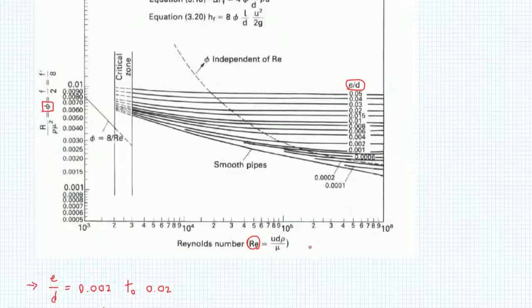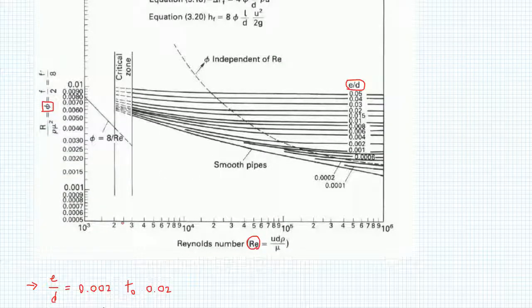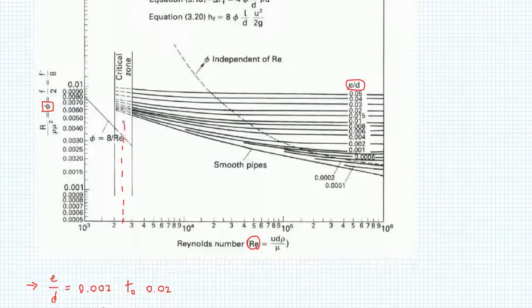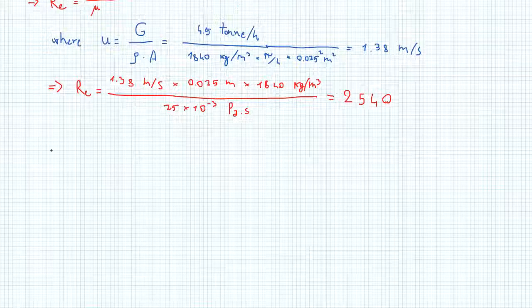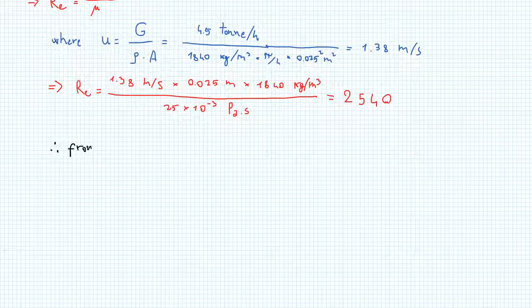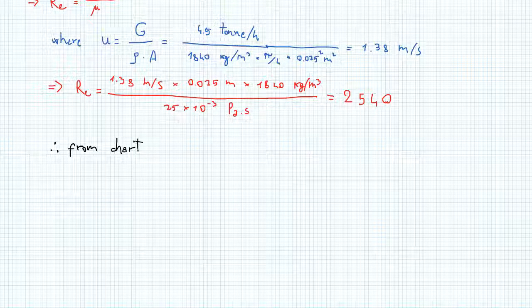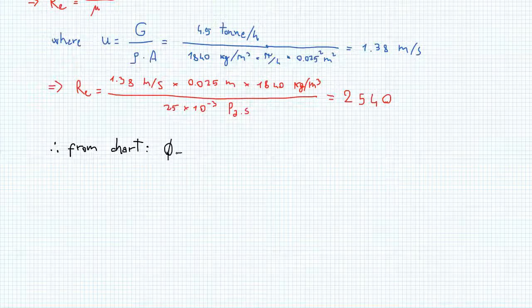So, Reynolds number corresponds to a line that sits approximately at this point, goes up, and our range of relative roughness goes from 0.002 to 0.02. So, this curve and this one, which corresponds then to pretty much this section here. If we want to pinpoint one value for phi, we can see that it's more or less 0.0065. Let's write that down so we can better define F. You can say that from the chart, phi equals 0.0065.